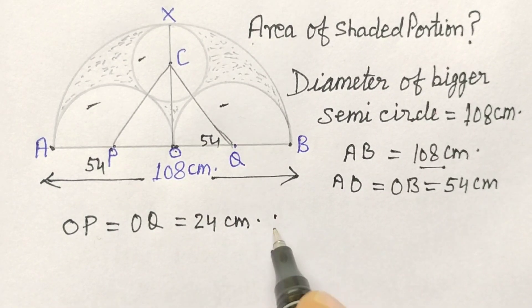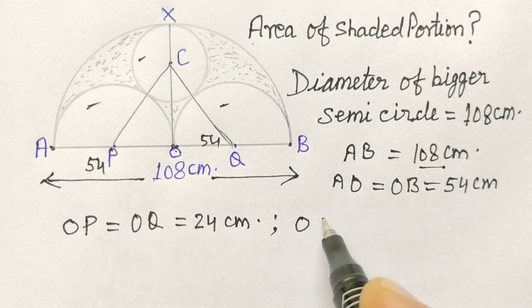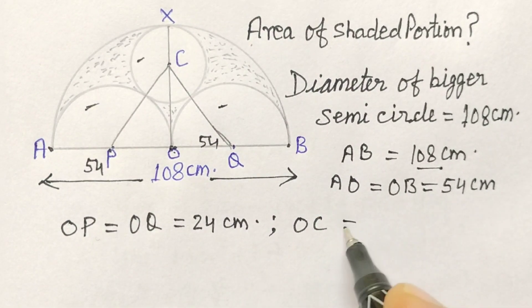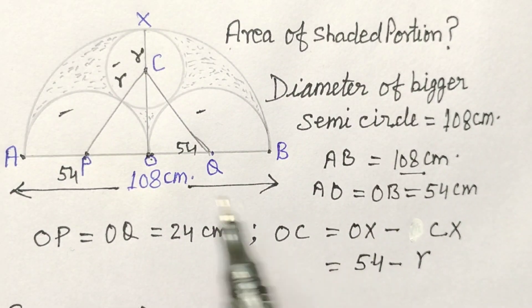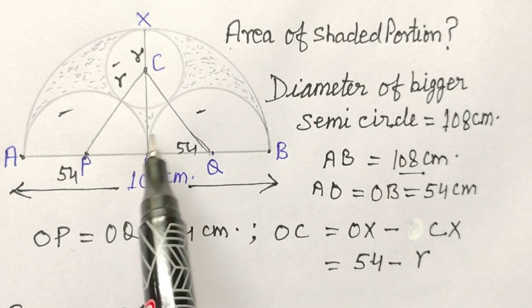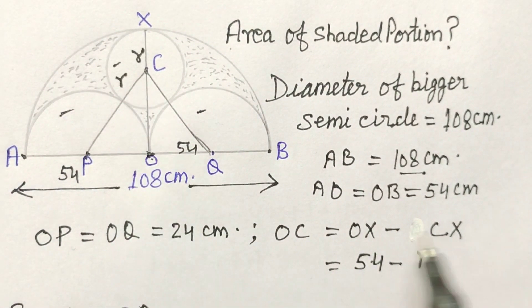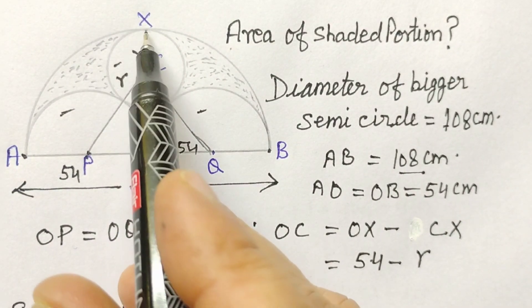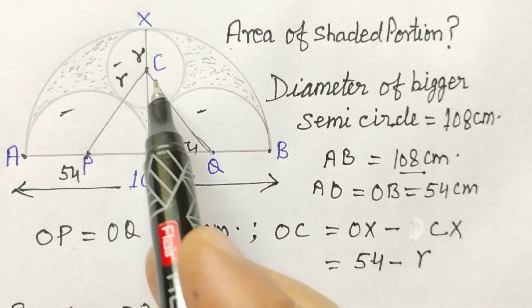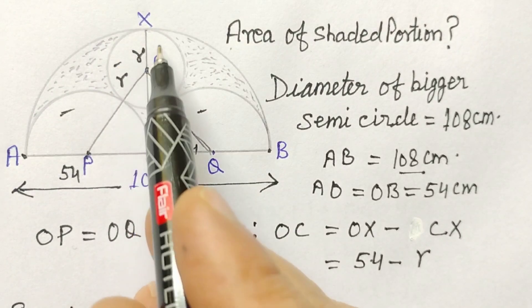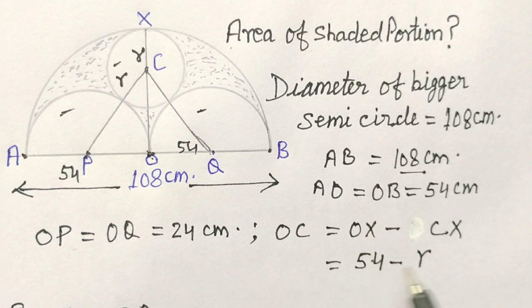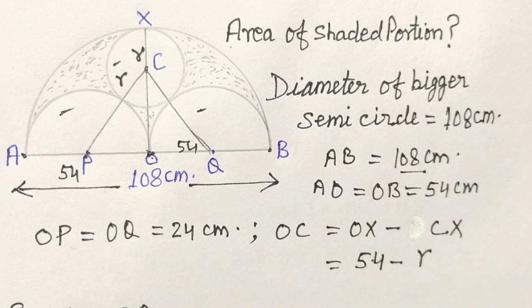Now OC will be OX minus CX, where CX is the radius of the small circle. So OC equals 54 minus CX, i.e., the radius of the small circle.